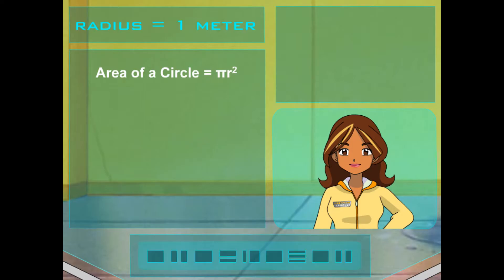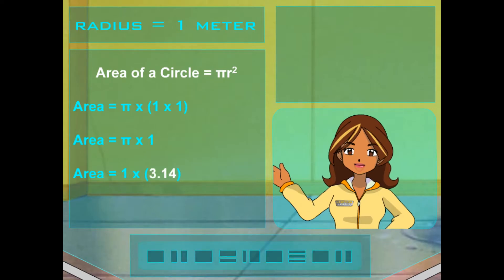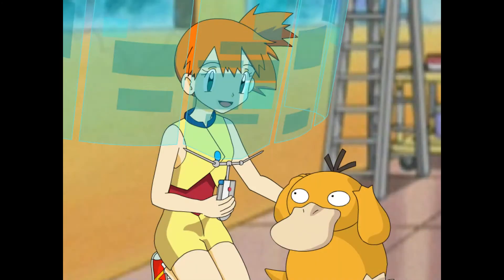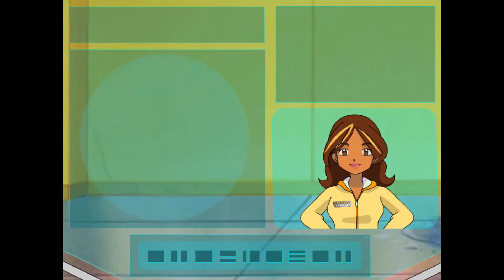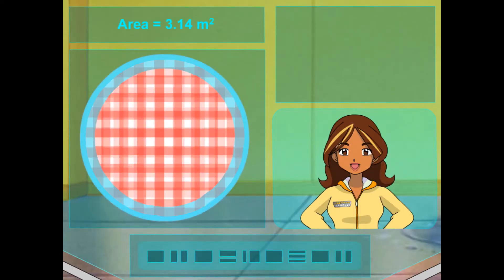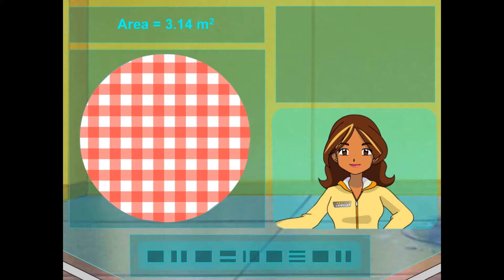Okay. For this tank, we would multiply pi by 1 squared, since the radius is 1 meter. 1 multiplied by 1 is 1. So the area of this circle is 1 pi. That's it. Now all you have to do is multiply 1 by pi, or 3.14. That is 3.14 square meters. Great work! You'll need 3.14 square meters of material for the top of this tank.